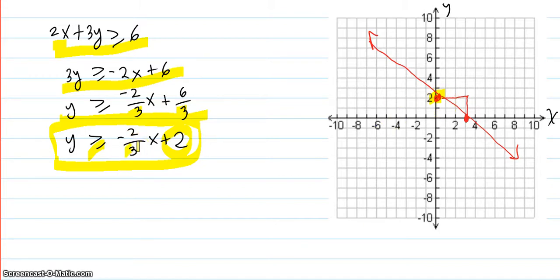Then I use the run of 3. Delta x is 3: 1, 2, 3. And a delta y of negative 2, which gives you the second point here. Then I draw the line through. It's solid this time. Solid, because we get the points on the line because of the equals.